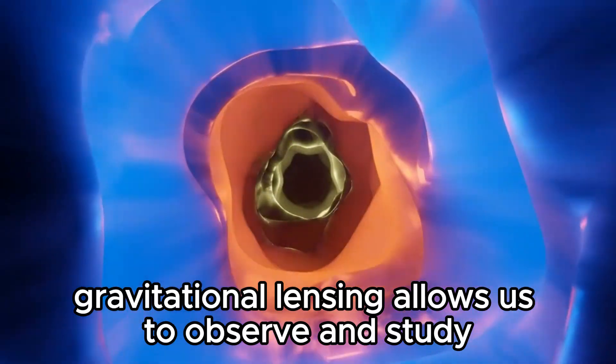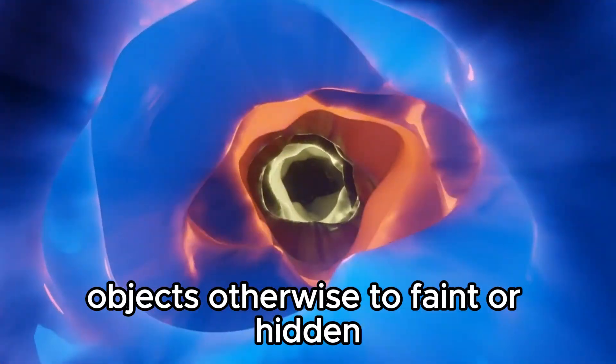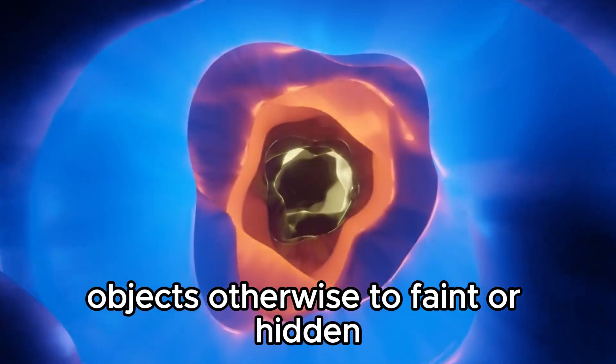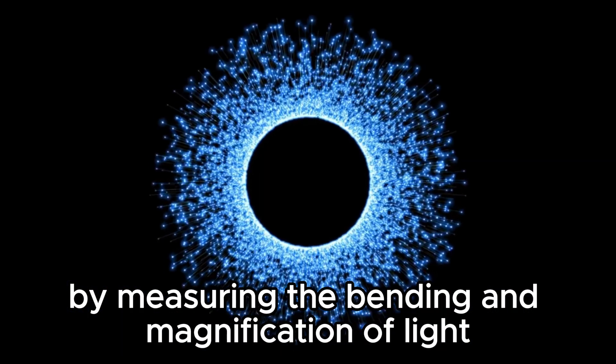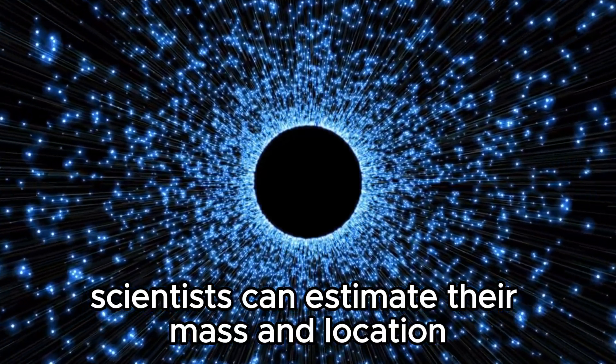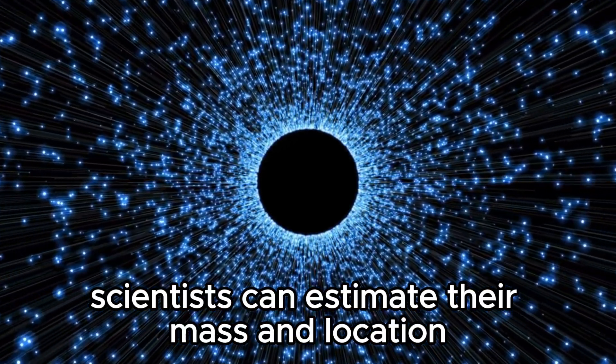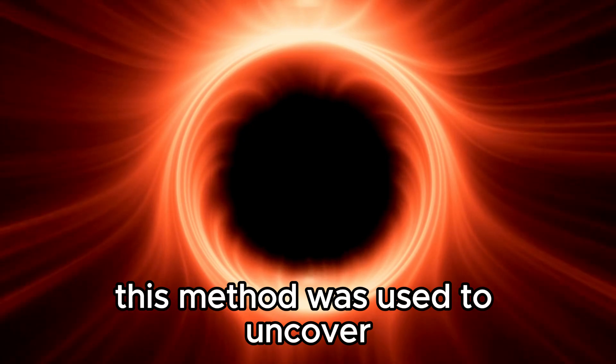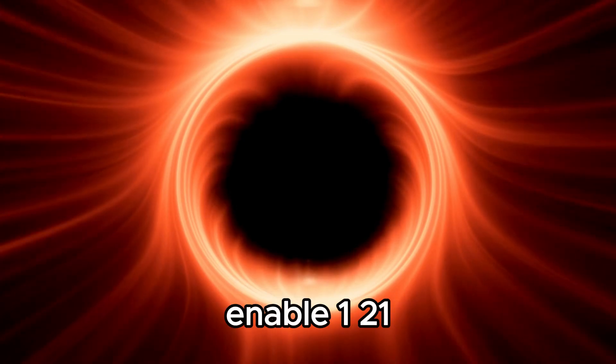Gravitational lensing allows us to observe and study objects otherwise too faint or hidden. By measuring the bending and magnification of light caused by massive objects, scientists can estimate their mass and location. This method was used to uncover the ultramassive black hole in Abel 121.